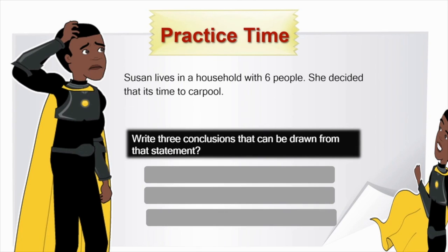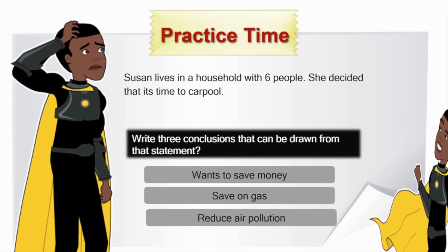Susan lives in a household with six people. She decided it's time to carpool. Write three conclusions that can be drawn from that statement. Put on your thinking cap — you can do this! She wants to save money, save gas, and reduce air pollution. Good job!